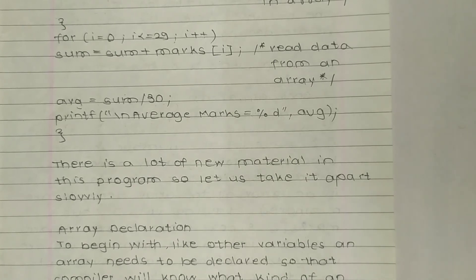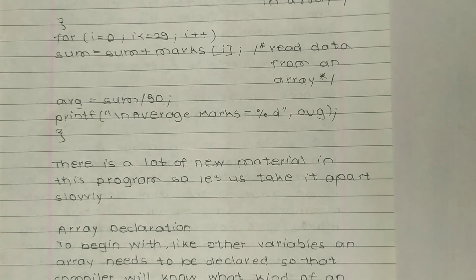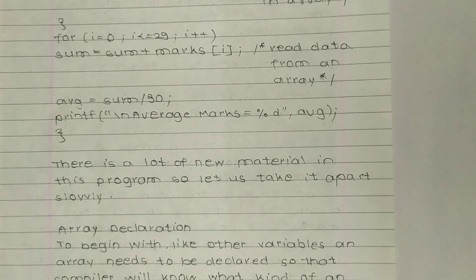Then printf("\nAverage marks = %d", avg) — this tells the compiler to print on a new line that the average marks equals the integer value of avg. Average was declared as an integer at the beginning of the program. There is a lot of new material in this program, so let us discuss it slowly.